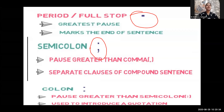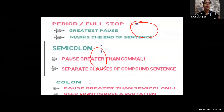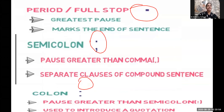When do we use semicolon? To separate the clauses of compound sentences. Now the colon — you can see the two dots. When we write dialogues, for example 'Gita said:' — those two dots are the colon. It is a pause greater than a semicolon. It is used to introduce a quotation — when we use it in dialogues, saying who said to whom — that is called a colon.